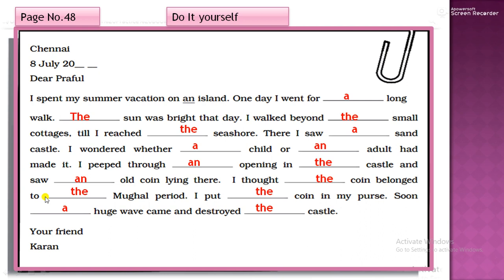Now, Mughal period is some particular period. So we are using article The. I put the coin. Now coin is again repeated. For repeated things, we use The. In my purse. Soon a huge wave came. A huge wave. Only single wave. So a huge wave came and destroyed the castle. So your friend Karan.